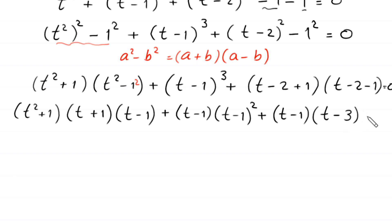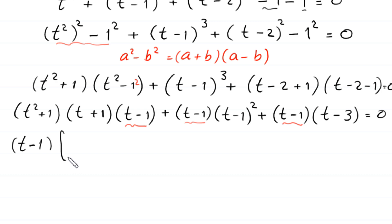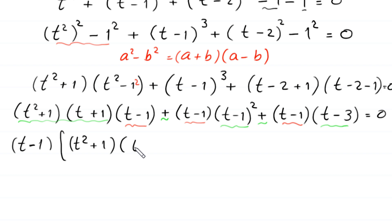As we can see, (t-1) is common in all terms. We factor out (t-1), leaving in the bracket: (t²+1)(t+1) + (t-1)² + (t-3) = 0.